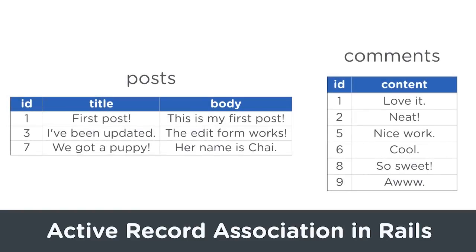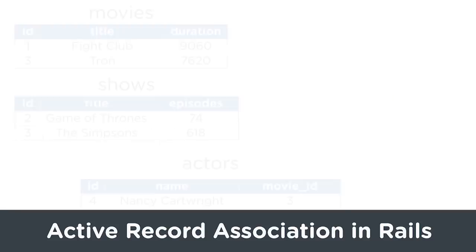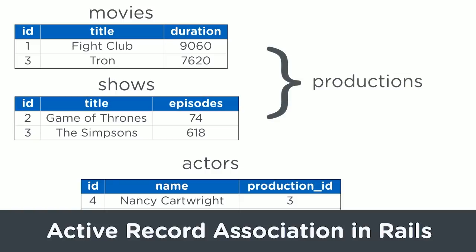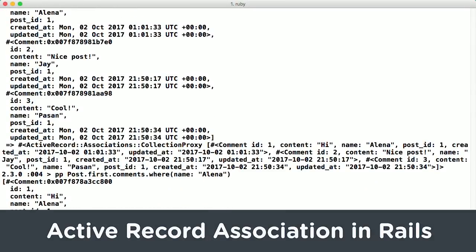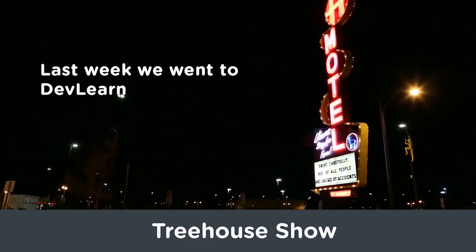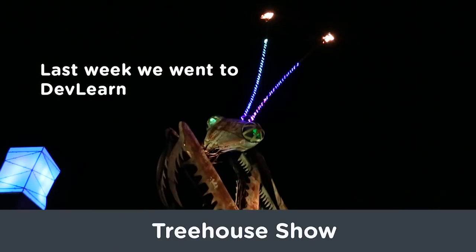Most of your Rails models are going to be connected to other models in some way. Rails uses associations to make it easy to track these relationships in your database. Learn about associations in our new course, Active Record Associations in Rails.